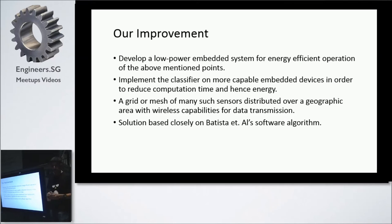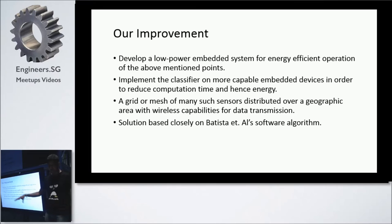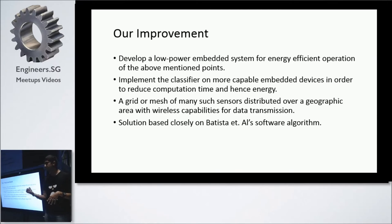The improvement we made was: first, we developed an embedded system and put the whole algorithm into a much smaller device. We implemented the classifier on more capable hardware — Raspberry Pi and Intel Edison — to get our algorithm running faster. Third, we created a grid of these devices arranged as a mesh network over a geographical area, used to detect and report detection events. When a detection event comes, the mesh pushes the data through a packet-switching mechanism to tell you which device caught which mosquito.